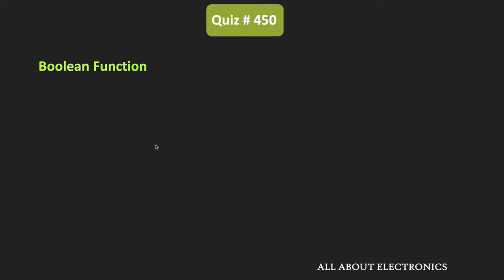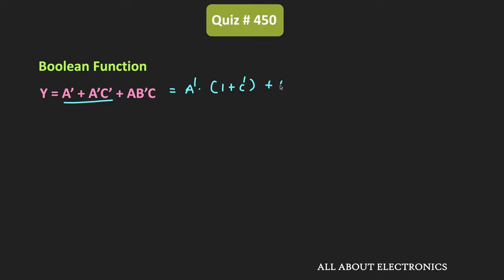We want to implement this specific Boolean function. As you can see, A-bar is common between the first two terms, so we can rewrite the expression as A-bar·(1 + C-bar) + A·B-bar·C. Since 1 + C-bar equals 1, this simplifies to A-bar + A·B-bar·C. To find the inputs x0 to x7, we need to find the corresponding minterms represented by this Boolean function.